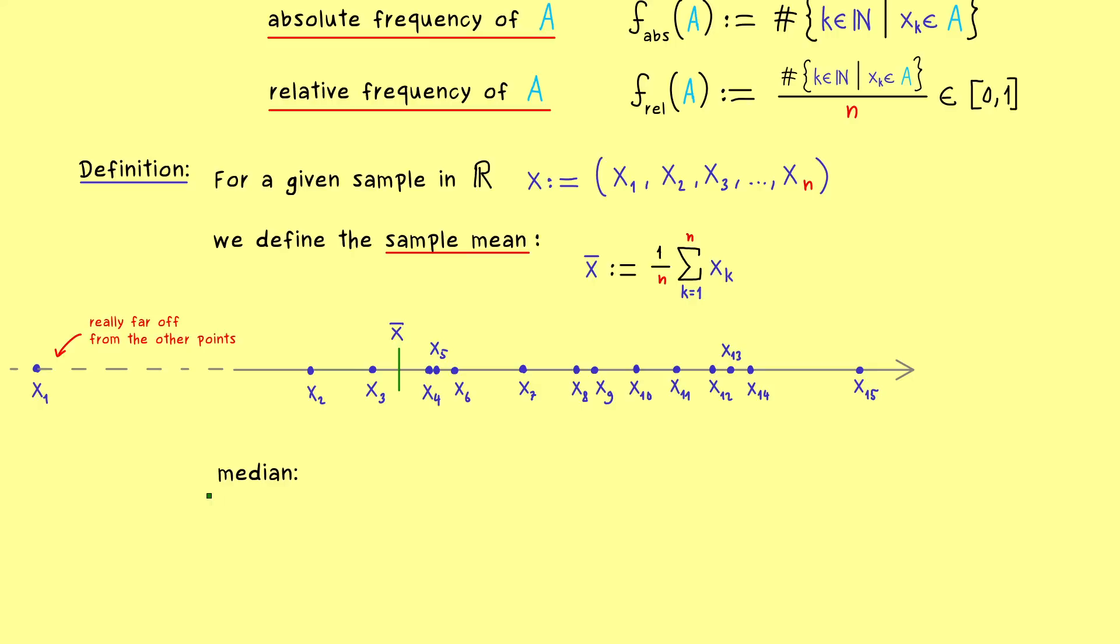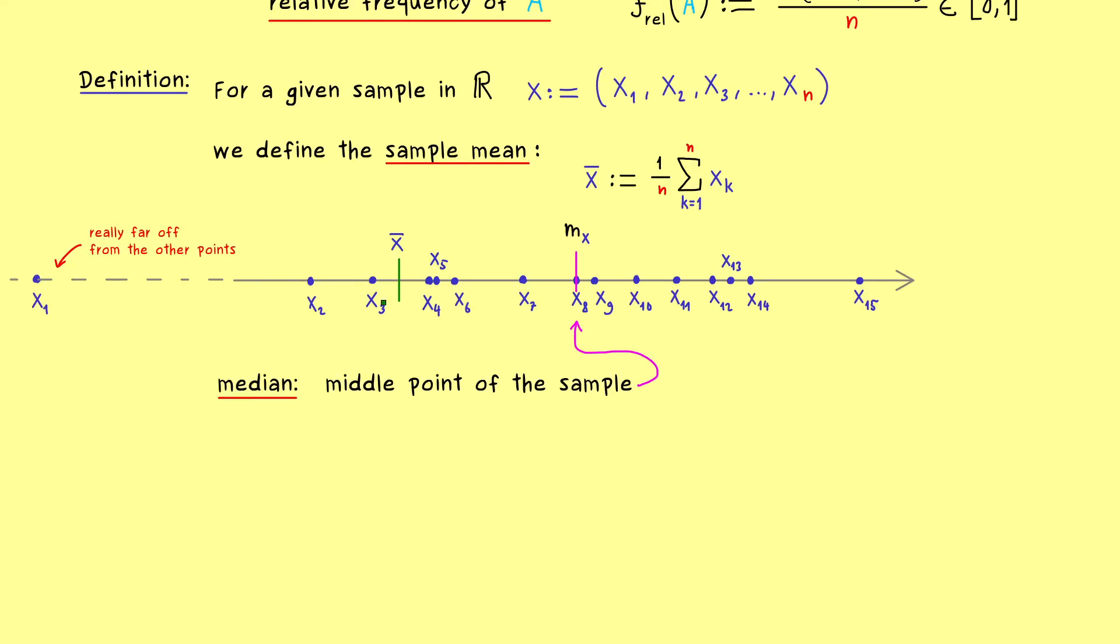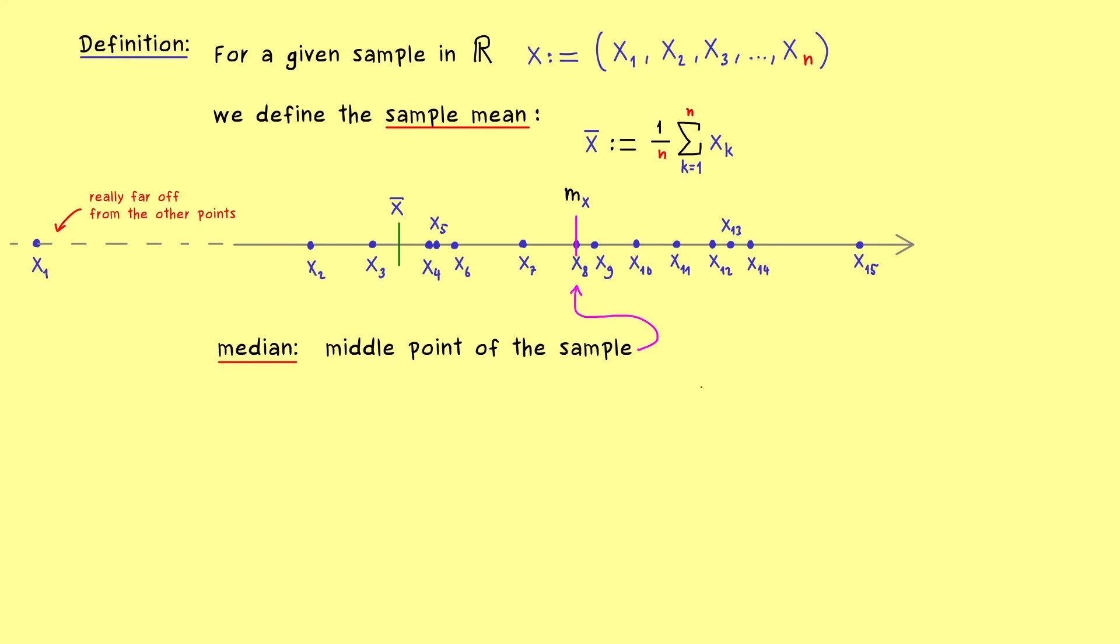So if we don't want this dependency on the single point, we can define and take the so-called median. Roughly speaking it's just the middle point in our data set. This means if the sample is ordered we can immediately read our middle point of the sample. Hence in our example it would be x_8 and this is what we call m. So again this is the median because we have 7 points on the left hand side and 7 points on the right hand side. Hence for the median it does not matter at all how far x_1 actually is off because it's just about the number of data points.